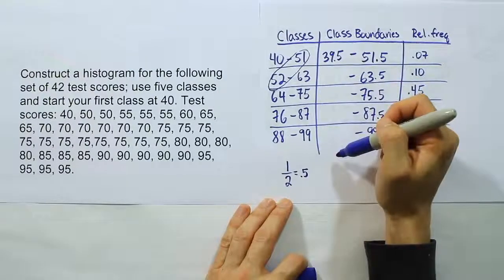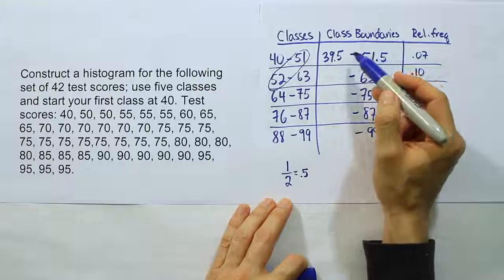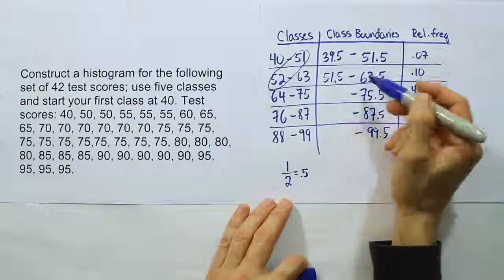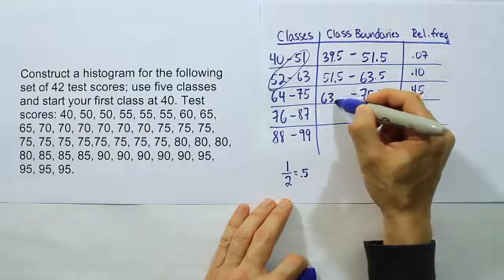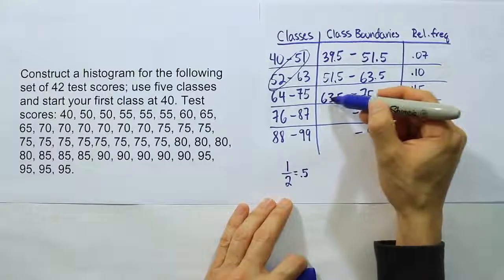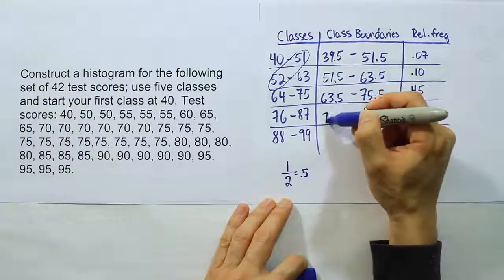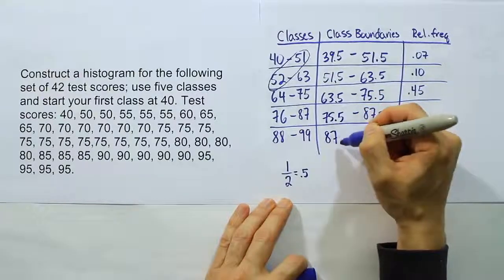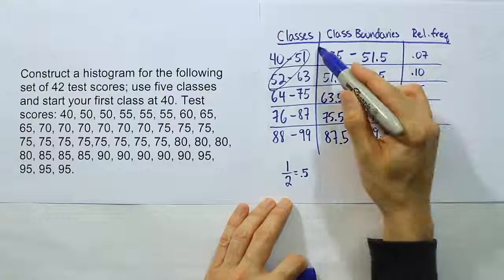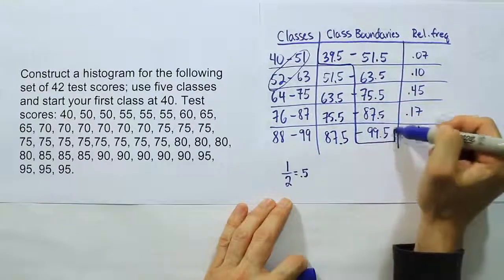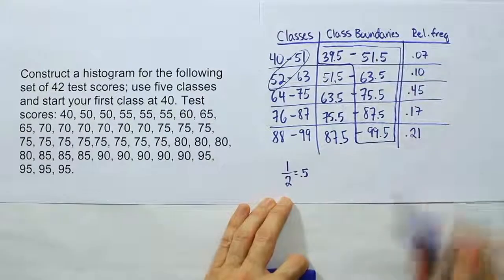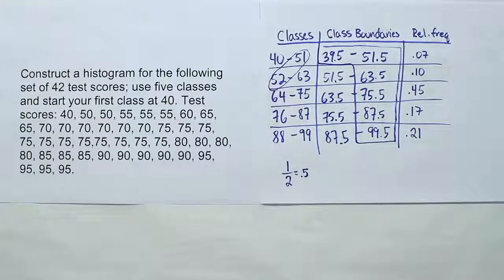We don't really need the other side of this. If we did do it, though, you would see that it goes to 51.5. The next one would be 63.5, then 75.5, and then 87.5. But I really only need these guys here. Those are the ones that I need to construct my histogram. Because it's that that we're going to label the x-axis with when we do our drawing.